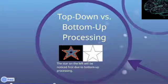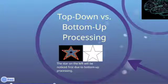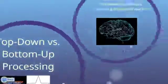Bottom-up processing relates to how people notice salient signals. It would explain why a person would look at a bright neon sign before a gray one, and why people quickly turn towards a loud, sudden noise. Computational models of attention that rely on bottom-up processing depend on saliency maps, which provide the saliency of everything in sight.